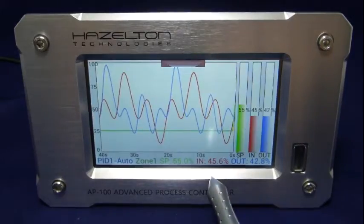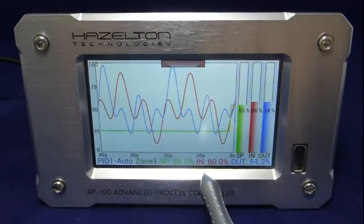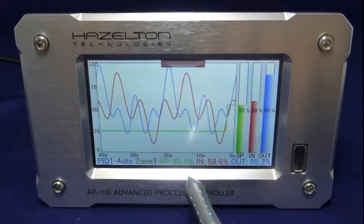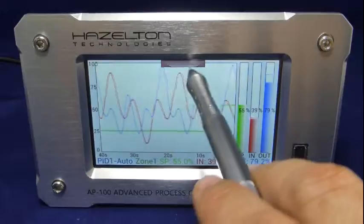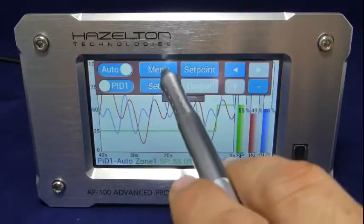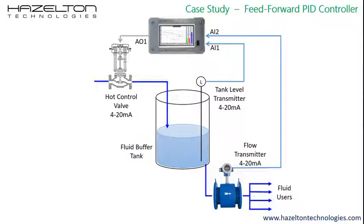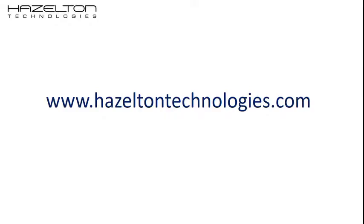Press the Set Point button and enter in the desired set point value. This feedforward PNID controller is now set up. For more information, please visit hazeltontechnologies.com.